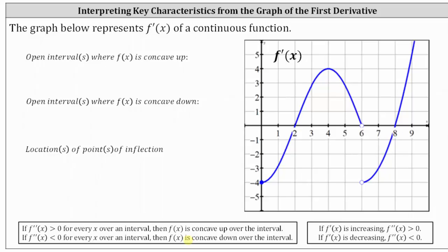So I'll have to make the connection that just like we know, if f of x is increasing the first derivative is positive, and if f of x is decreasing the first derivative is negative. Similarly, if f prime of x is increasing, then the second derivative is positive, and if f prime of x is decreasing, the second derivative is negative.